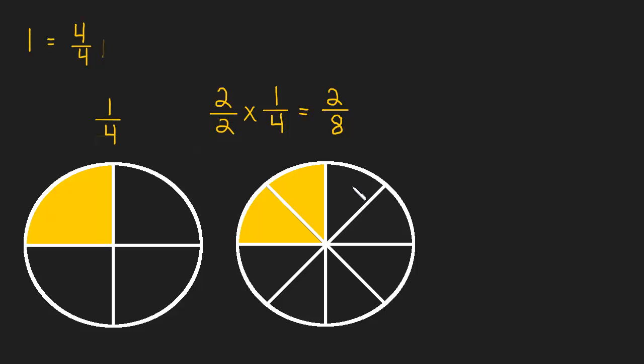So one fourth is this exact same amount of pie as two eighths. Why is that? Well, because of this right here. We multiplied by two over two, but we just talked about the fact that that's the same thing as one. Two over two is the same thing as one, so it's like we multiplied by one. One times one fourth is equal to one fourth. So these two equations are giving us the same information, really. One fourth and two eighths are the exact same amount.